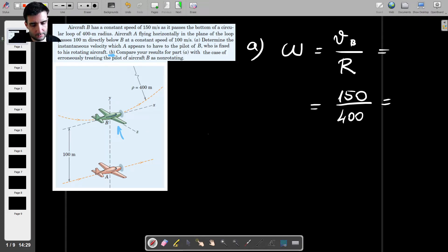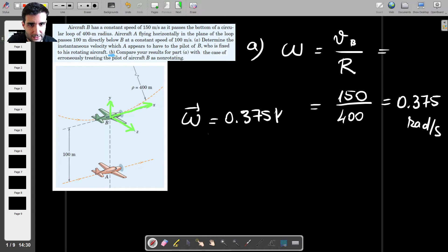Which turns out to be 0.375, and those are, of course, radians per second. So what we can do now is, we can convert this angular velocity to a vector. And we have the fact that aircraft B is rotating counterclockwise, and the question also gives us a set of axes by default. So we have Y going upwards, we have X going this way, and we have Z going this way.